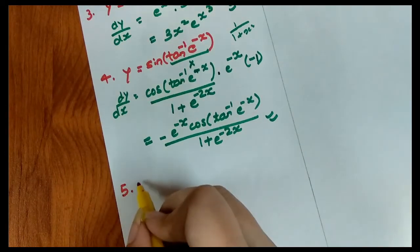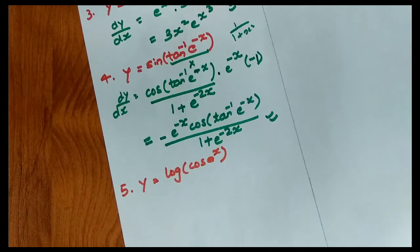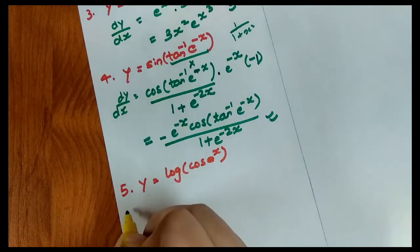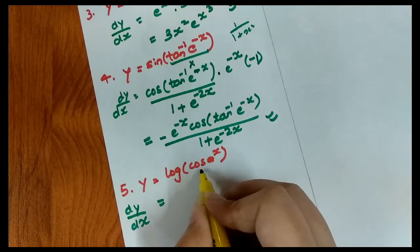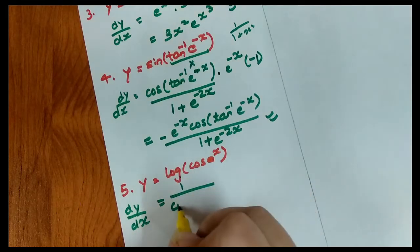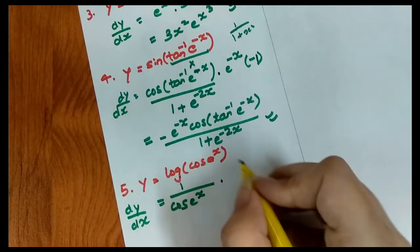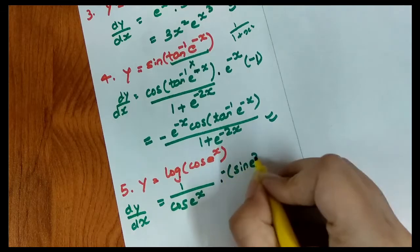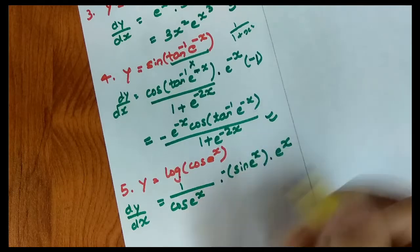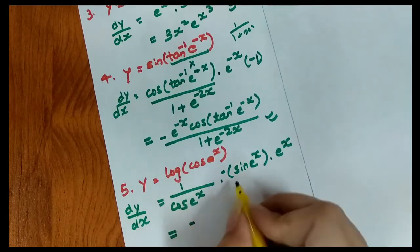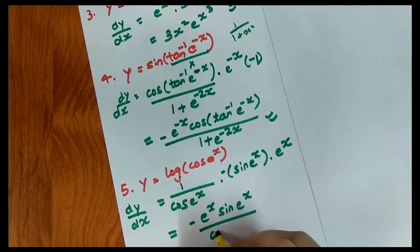Now the next question: y = log(cos(e^x)). Let's find dy/dx. We start by differentiating the log — the derivative of log(x) is 1/x — so we get 1/cos(e^x), keeping cos(e^x) as it is.